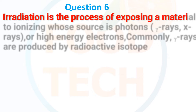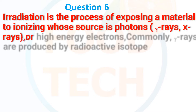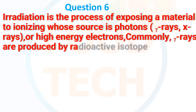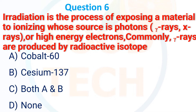Next MCQ: Irradiation is the process of exposing a material to ionizing radiation whose source produces gamma rays, X-rays, or high-energy electrons. Commonly, gamma rays are produced by radioactive isotopes. Options: (A) Cobalt-60, (B) Cesium-137, (C) Both A and B, and (D) None.